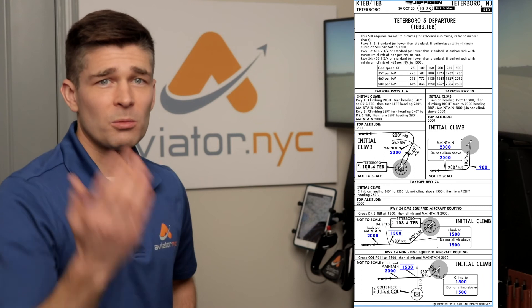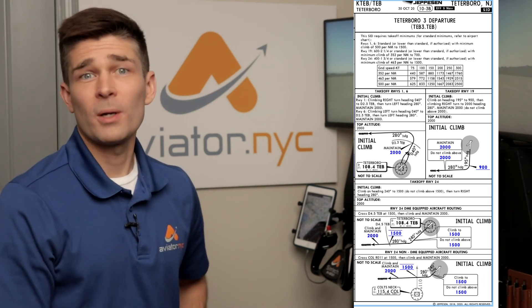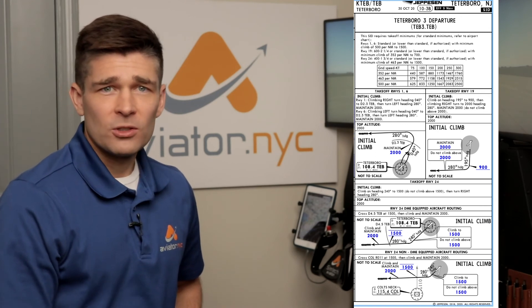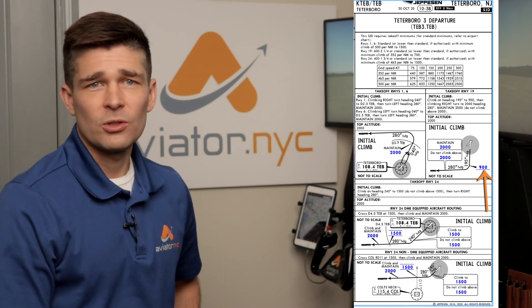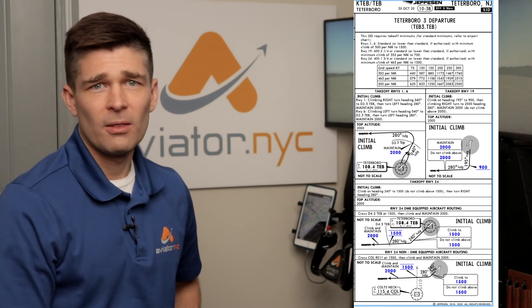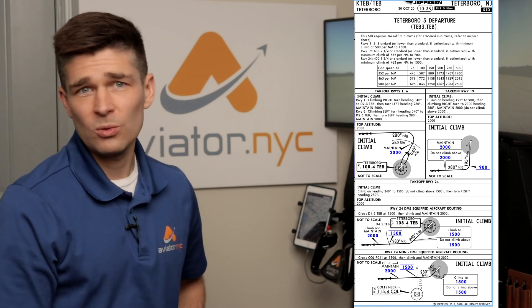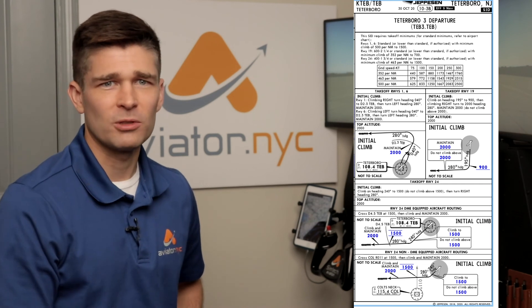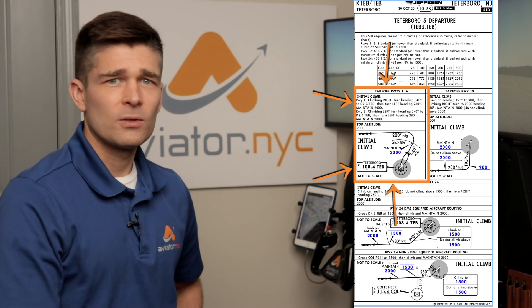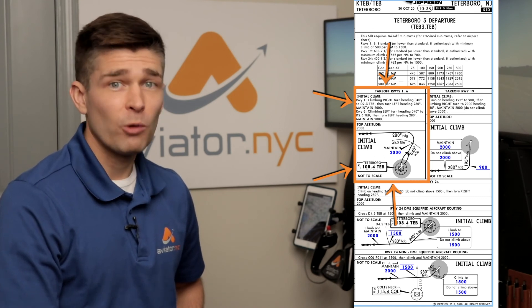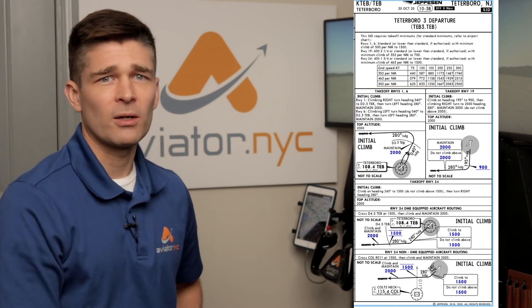Some SIDs are quite complex, with lateral tracks to follow, multiple altitude restrictions, and possibly even speed restrictions. Let's look at the Teterboro 3 departure using runway 19. In this case, they specify a turn altitude of 900 feet — you'll climb runway heading to 900 feet, then make a right turn to 280 degrees, then maintain 2,000 feet and don't climb above 2,000. Looking at that same chart for runway 1 or 6, we're going to turn to a heading of 040, but there's no altitude specified, so we'll make our turn at 400 above the airport, and then follow the SID.